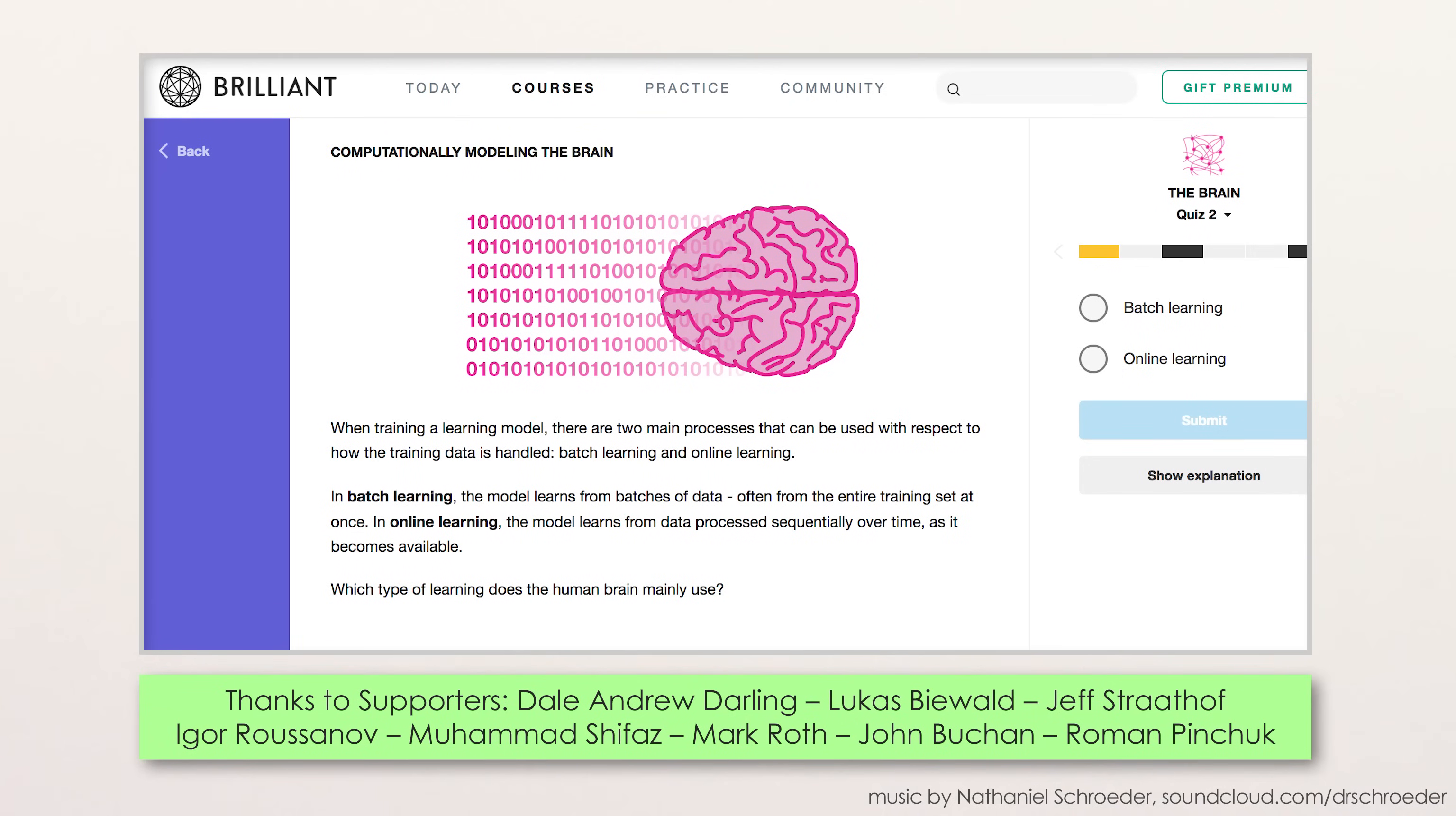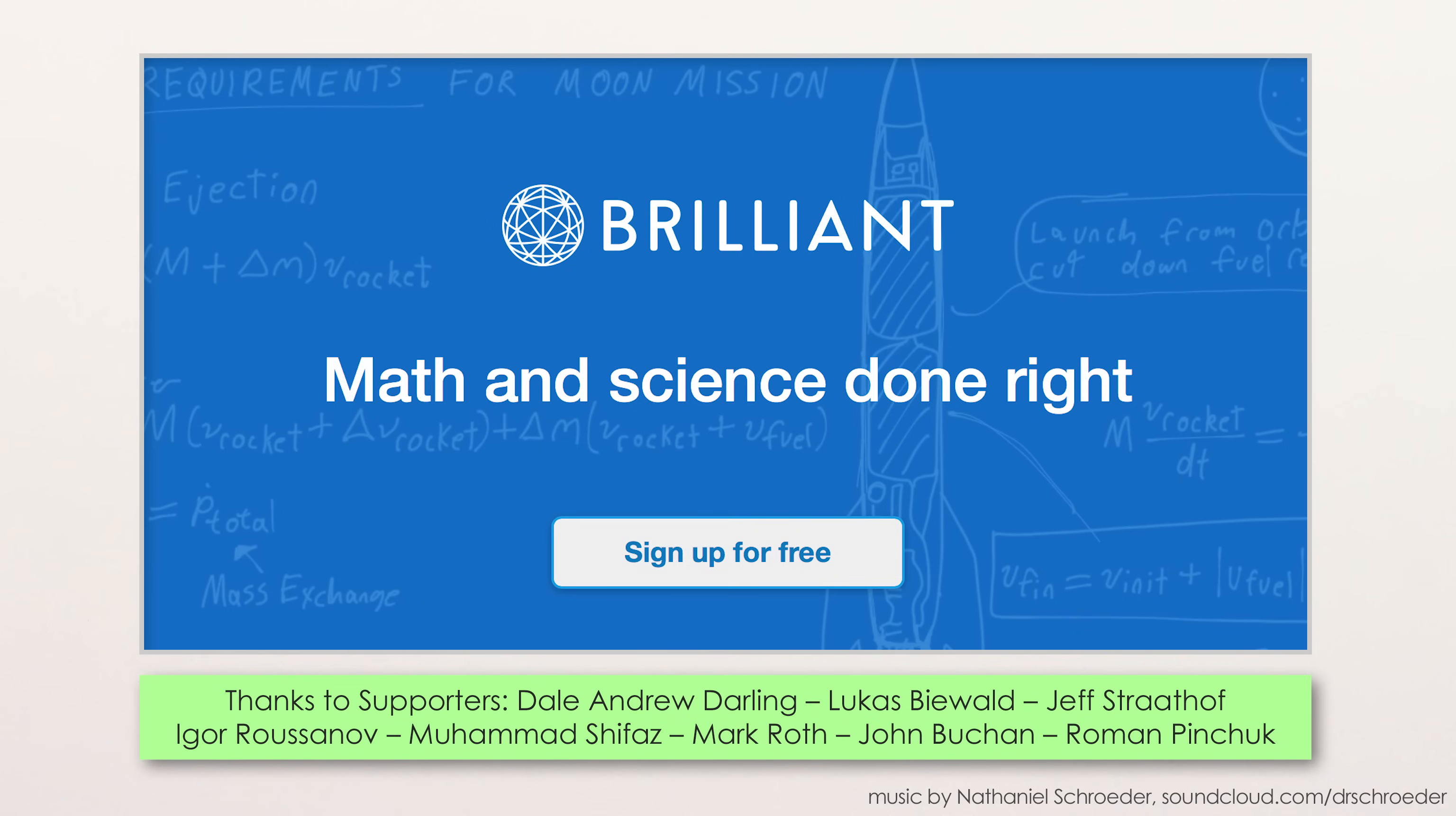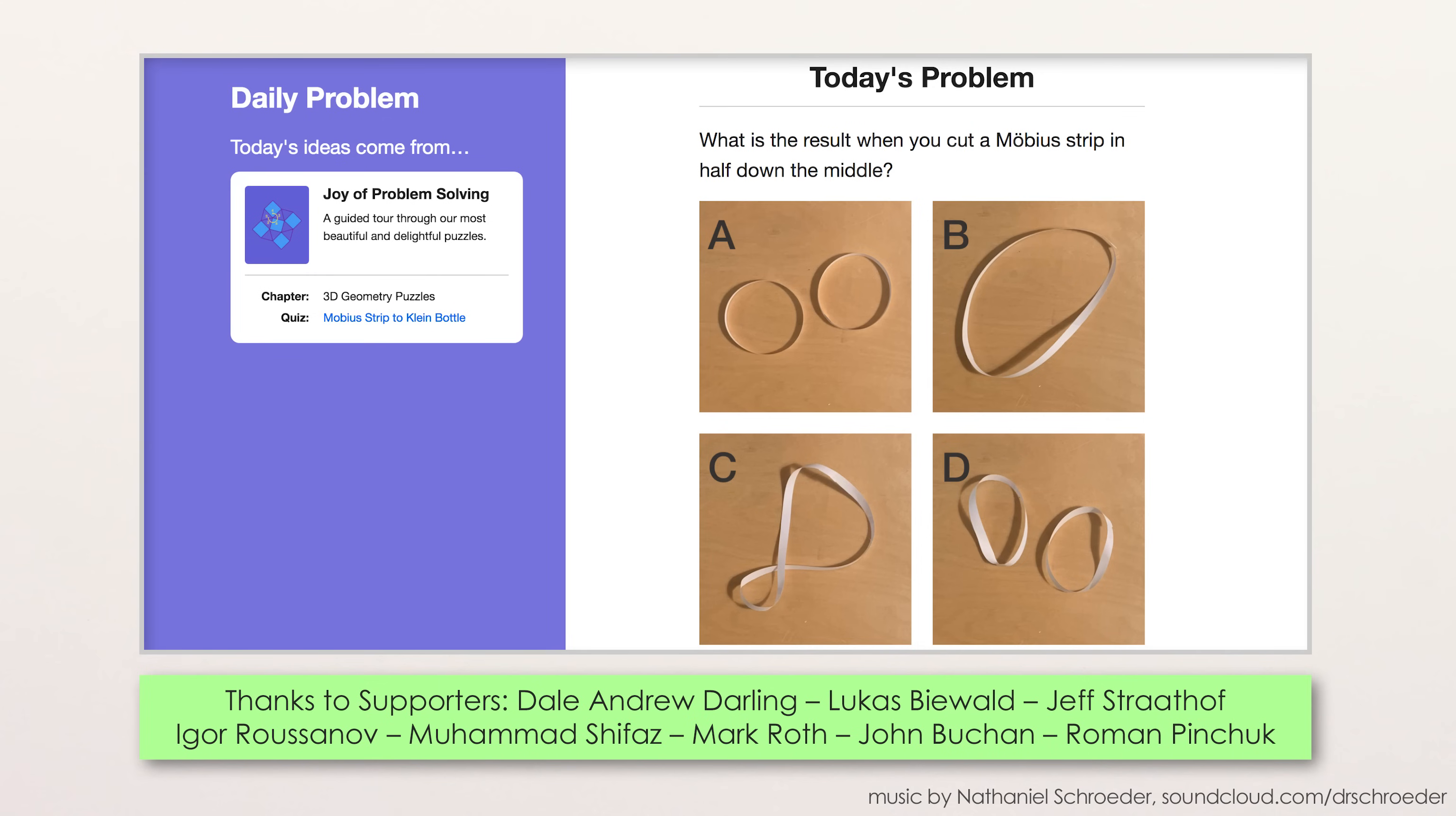If you want to prevent your mind from spontaneously decaying, you may want to check out the new daily math and science problems from this video's sponsor, Brilliant.org. To turn keeping your brain sharp into a regular habit, they're now offering fun daily problems like, what happens when you cut a mobius strip in half?